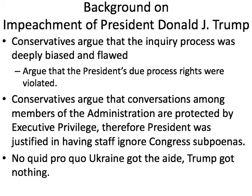Conservatives argue that the inquiry and the whole impeachment process was — to use President Trump's words — a witch hunt: deeply biased, flawed, going after him for political means, not because of any real violation of the law. They argued that the president's due process rights were violated — that he never got to confront the whistleblower, who was protected under whistleblowing laws but publicly accused President Trump of breaking the law. Your due process rights include being able to question those who bear witness against you and to question the evidence. They argue the whole process was rigged, and that the conversations of the administration are protected by executive privilege, so President Trump was justified in ignoring congressional subpoenas.